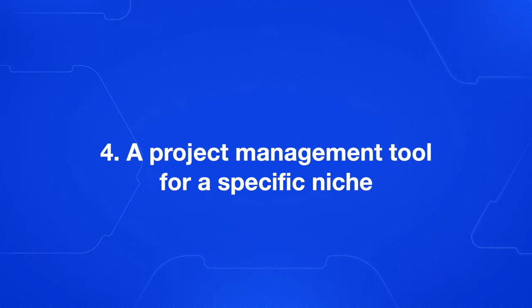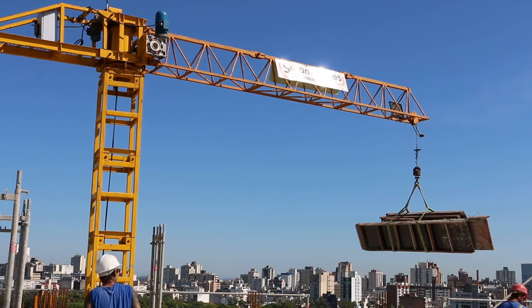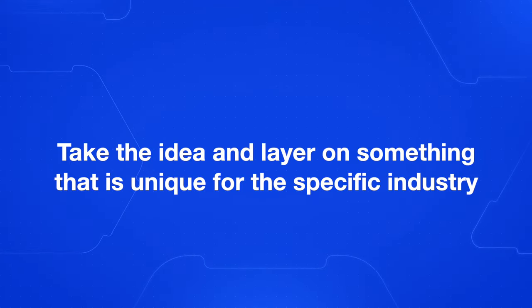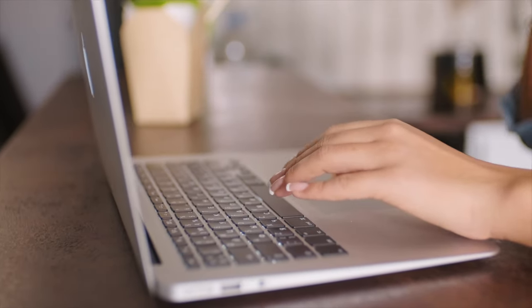The next micro SaaS idea is a project management tool similar to Trello — but built for a specific industry, like doctor's offices or construction companies, or any industry you have insight into. In addition to a simple project management tool, add features that are unique to that industry. The key with all of these ideas is layering on something unique for your specific industry — ideally one that doesn't have a product that speaks directly to them, so you can offer more value than a generic app like Trello.